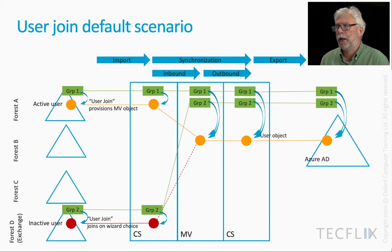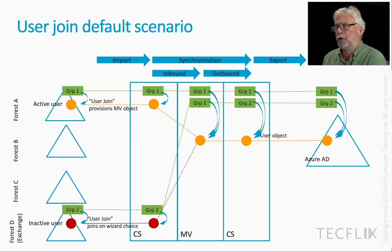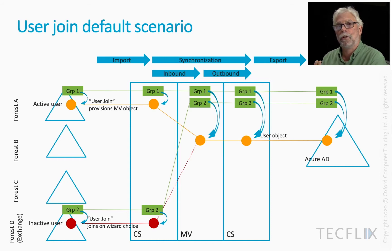Our aim here is that in Azure AD we'll have a single object representing a user who may have multiple representations across various forests. The aim is to get to a single object, and all the groups from all the forests need to be represented in Azure AD — possibly merged together as we've seen before — and the memberships should be correctly showing against that single representation in Azure AD. This is our simple join case and we'll develop this as we go along.